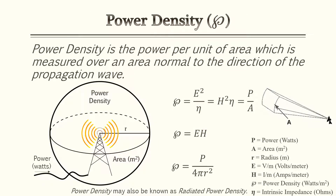Just like any calculation in the electrical world, we always want to know power. For antennas, it's very common to come across power density. Power density is the power per unit area, measured over an area normal to the direction of the propagation wave. There's an illustration of an antenna radiating power over a given area — usually a radial, circular area. The power dissipates outward and gets weaker the further it goes. The closer you are to the focal point, the stronger the power density. Some books may also refer to this as radiated power density.